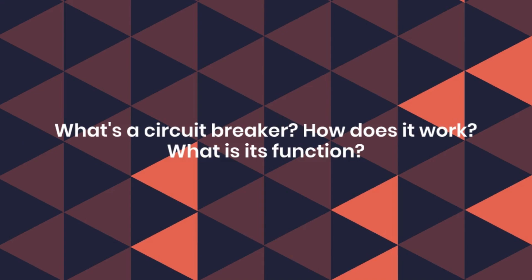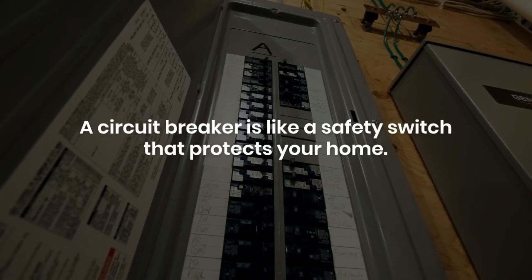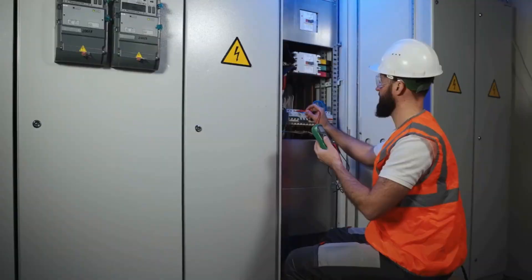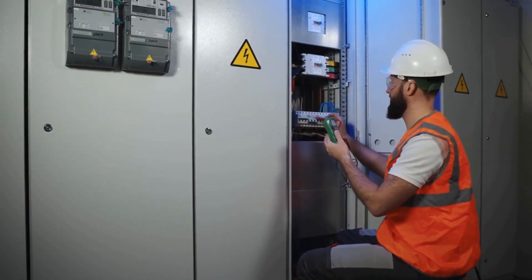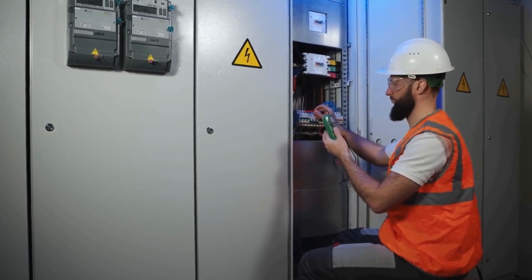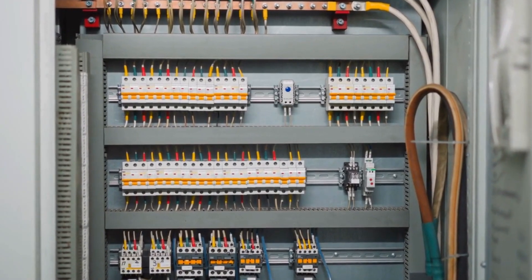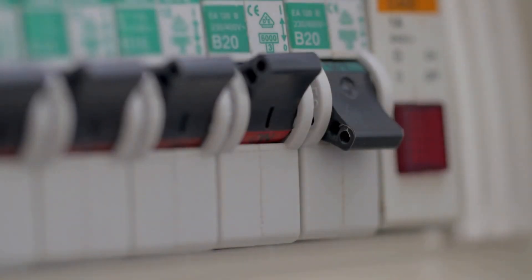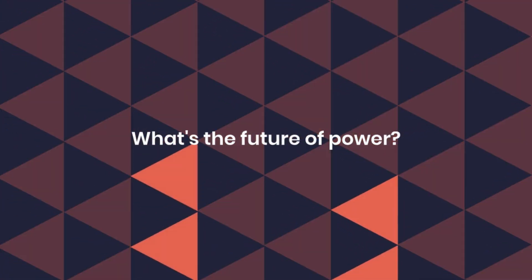What is the function of a circuit breaker? A circuit breaker is like a safety switch that protects your home — it automatically stops the flow of current when there is an overcurrent or short circuit, preventing damage and potential hazards. Unlike fuses, circuit breakers can be reset and reused, making them a reliable choice.